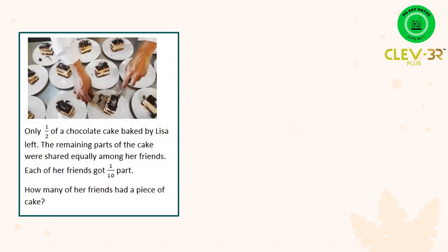For question number 2, from the question we know that the number of friends that had a piece of cake is the unknown. Bilangan kawan yang dapat cake itu adalah satu nilai yang kita tak ketahui. So we can write the equation as 1/2 divided by an unknown and each of them got 1/10 part of the cake.